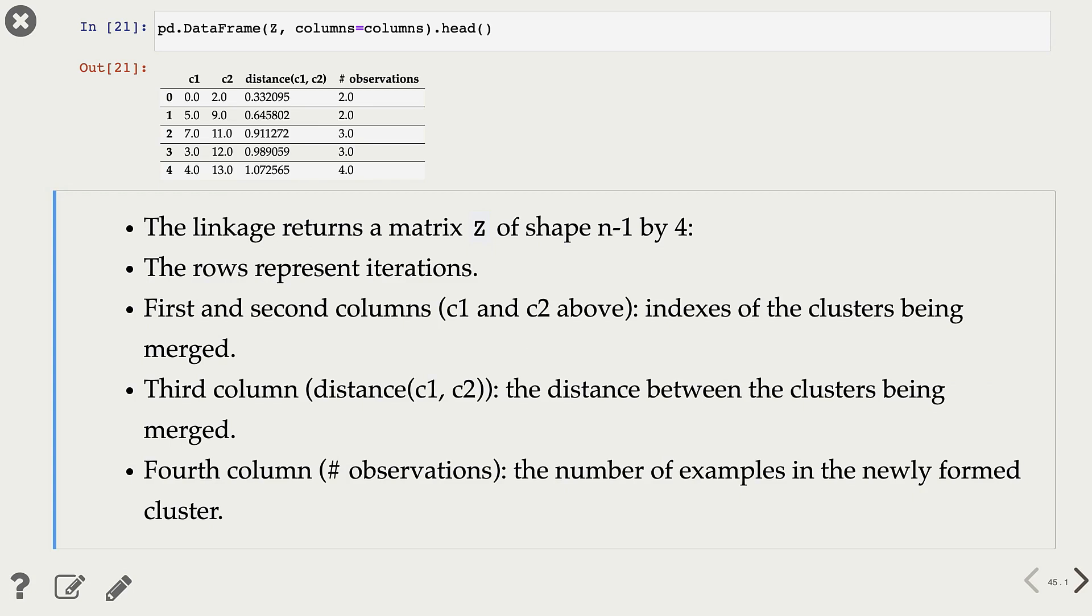The linkage function returns this matrix z of shape n minus 1 by 4. So it has four columns, and each row here represents iterations in our hierarchical clustering.